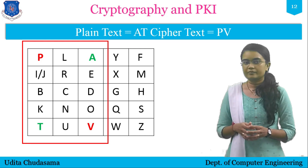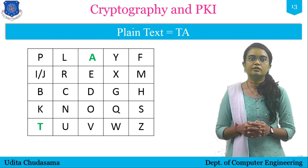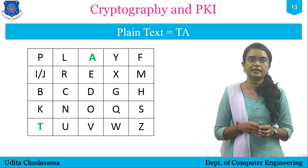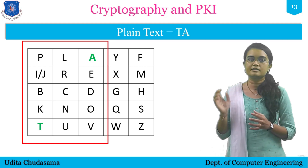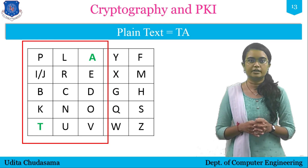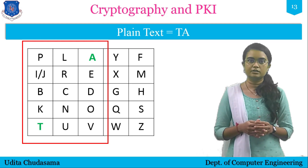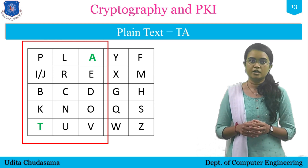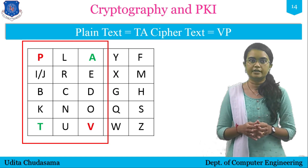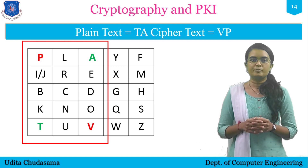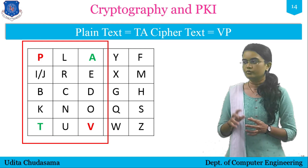Next pair is TA. We locate T and A in the matrix and form a rectangle. Encrypting T: we find the letter in the same row of T at the other corner of the rectangle, giving V as cipher text for T. For A: we find the letter in the same row of A at the other corner, giving P as cipher text for A. So the pair TA encrypts as VP.